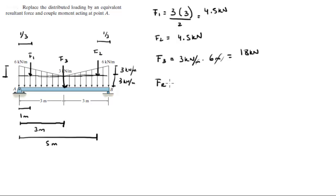The resultant force is the sum of these three forces. When you add them up, you see that it's 27 kN.